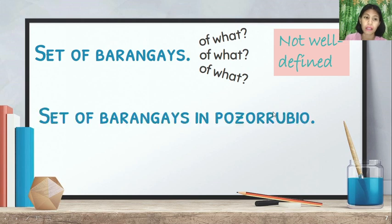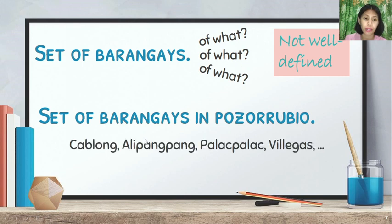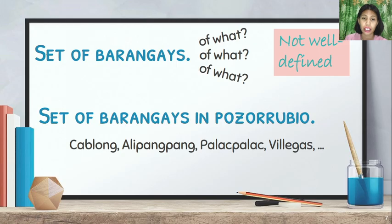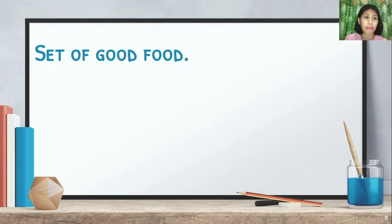Let's make it well-defined. 'Set of barangays in Pozorrubio' — now we have the specific municipality, so we can have the same answer. Examples of barangays in Pozorrubio include Magtaking, Calong, Alipampang, Palac-Palac, Villegas, Bantugan, Nantangalan, Maambal, Malokyat, and so on — all the barangays in Pozorrubio. That is well-defined.